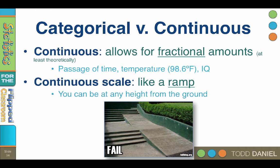A continuous scale is like a ramp. You can be any height from the ground. If we have a ramp, I could say to you, go stand so that you are 9 inches above the sidewalk. And you could scoot up and down the ramp to find the one spot where your right foot was 9 inches off of the ground.